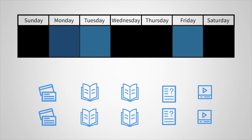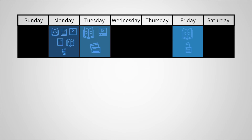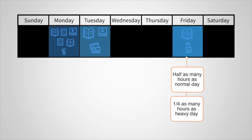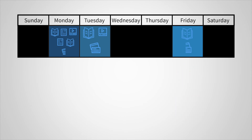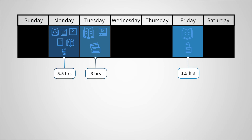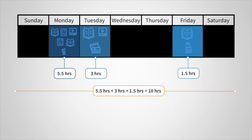Likewise, if you mark a day as a light day, Cramfighter takes work off that day and distributes it onto your normal and heavy days. A light day will have about half as much work as a normal day, and a quarter the amount of work as a heavy day. In our example, if you marked one day as light and one day as heavy, you might have around 1 and 1/2 hours of work on the light day, 3 on the normal day, and 5 and 1/2 on the heavy day. Cramfighter isn't changing the amount of work you have to do, just dividing it up differently so more of the time and tasks happen on heavy days and less on your light days.